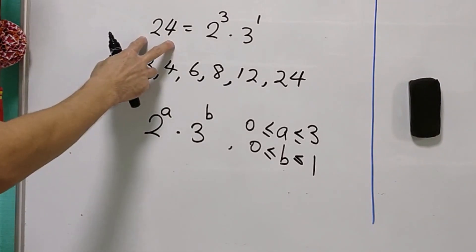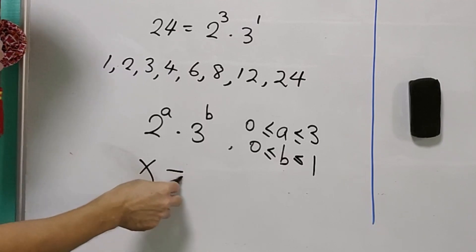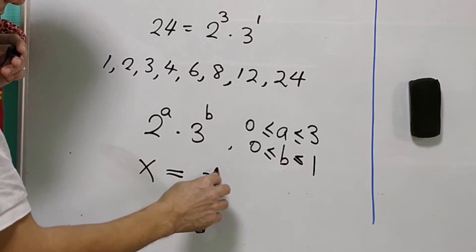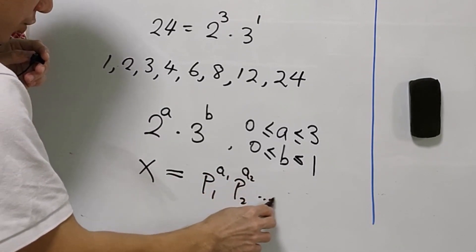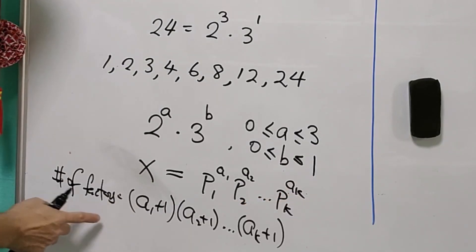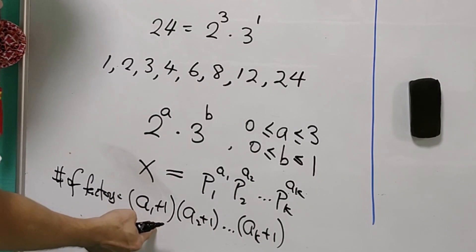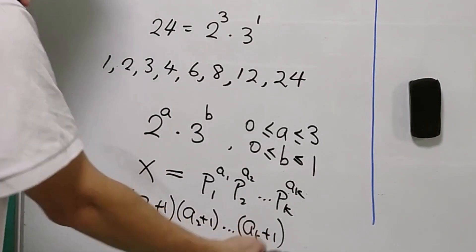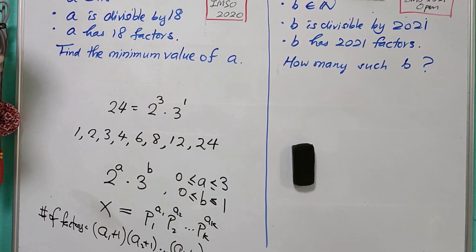In short, we write any number X into its prime factorization as P1 to the A1, times P2 to the A2, and so on up to PK to the AK. The number of factors of X is then given by the expression (A1 + 1)(A2 + 1) · · · (AK + 1). This is the main idea to solve both questions.